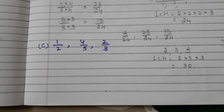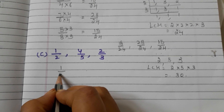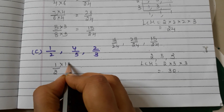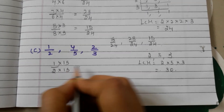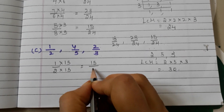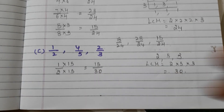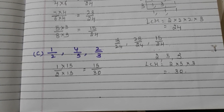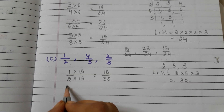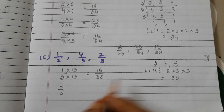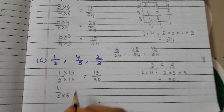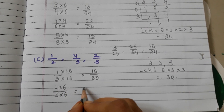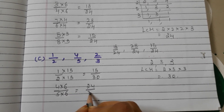Now take the fraction 1 by 2. 2 fifteens are 30, so we multiply the numerator and denominator with 15: 15 ones are 15 and 15 twos are 30. So 15 by 30 is the equivalent fraction for 1 by 2. Now take 4 by 5: 5 sixes are 30, so we multiply the numerator and denominator with 6: 4 sixes are 24 and 5 sixes are 30.